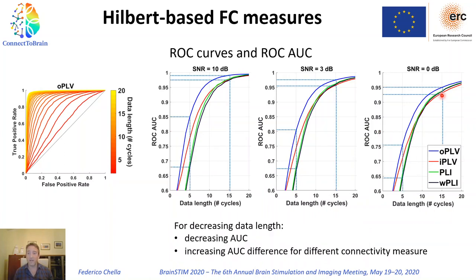Also, the value of the area under the curve represents the performance of the metrics and can be used to compare different connectivity metrics. We found that while at large data length the area for all connectivity metrics was quite similar — denoting similar performance — these values become quite different at short data length. This means that at short data length, the choice of connectivity metric matters. For instance, we found in these simulations that PLV performed better than all the other connectivity metrics.